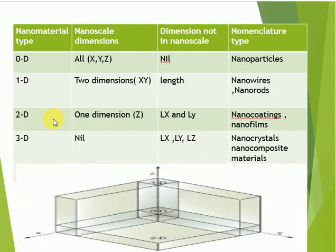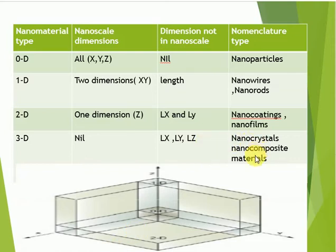Two dimensional nano materials are those in which only one dimension out of three is measured within nano scale — specifically the Z dimension — while X and Y are not in nano scale. Examples: nano coatings and nano films. Three dimensional nano materials are those in which all three dimensions are not measured within nano scale. Examples: nanocrystals, nanocomposites, and nano materials in bulk form.